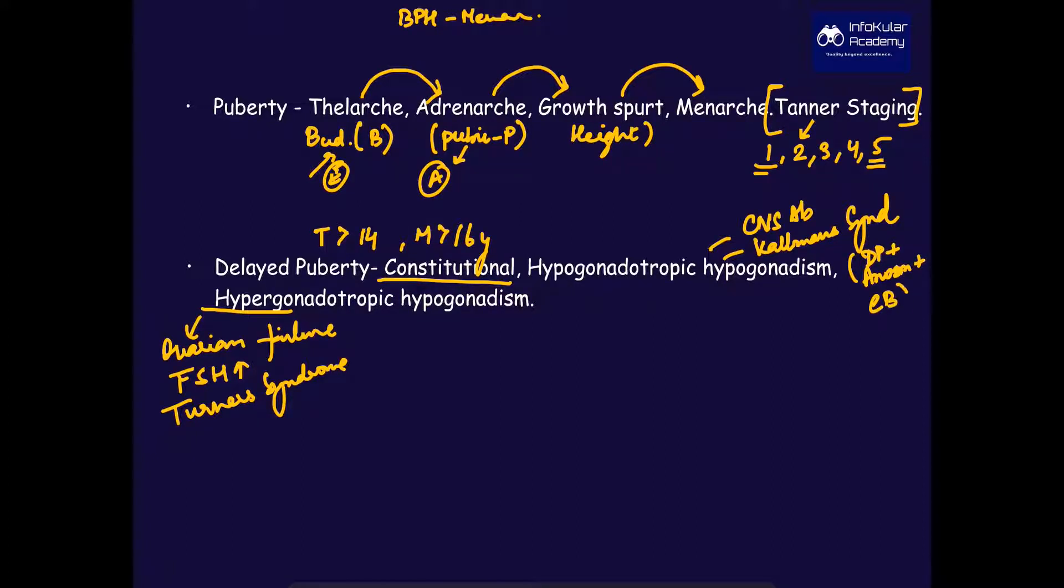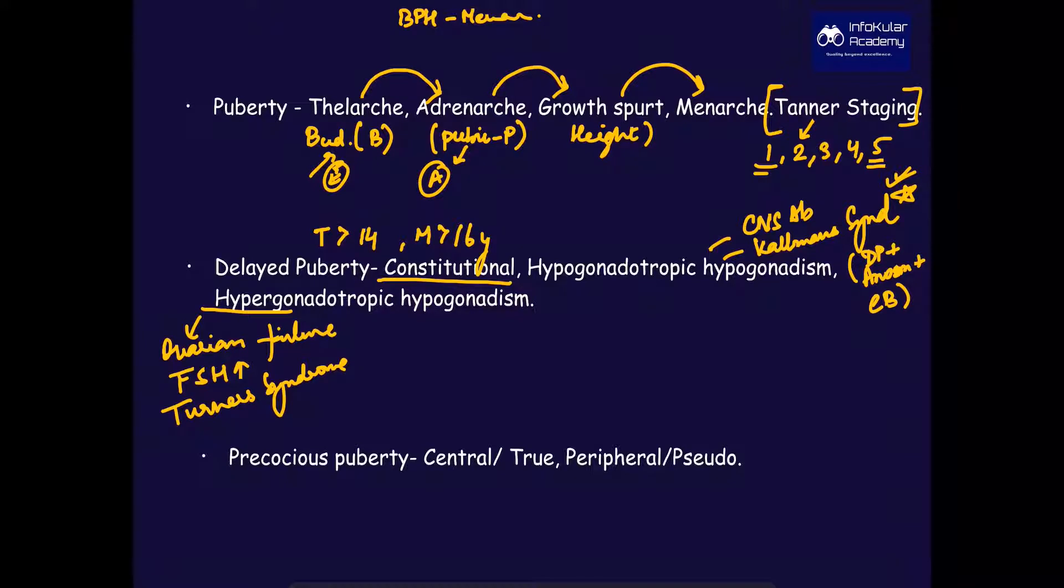Next is precocious puberty. One should know the definition: thelarche occurs before the age of eight years and menarche ends up occurring even before the age of ten years. It is called precocious puberty. Causes can be central as well as peripheral.